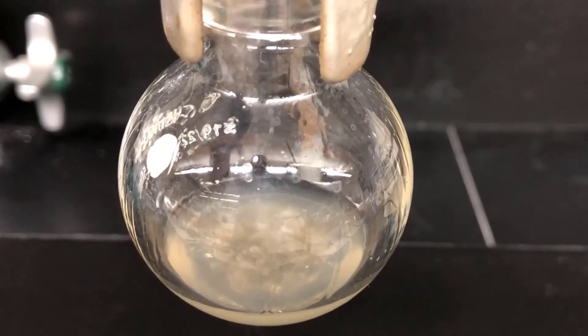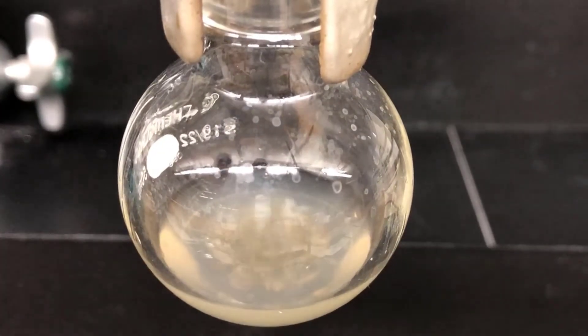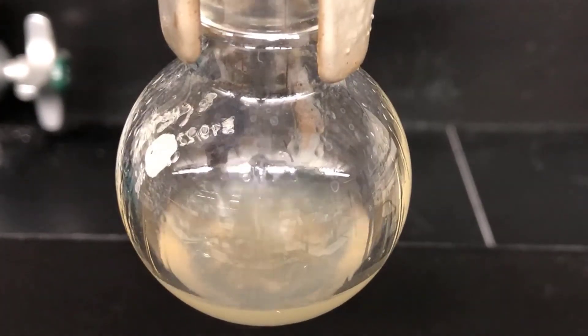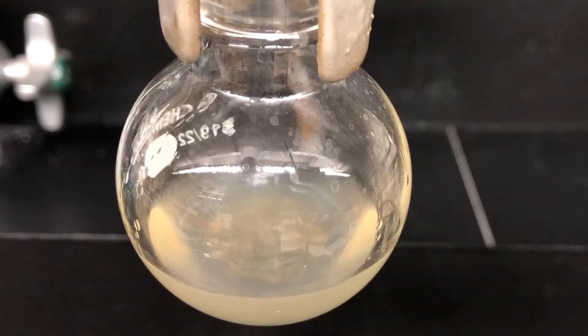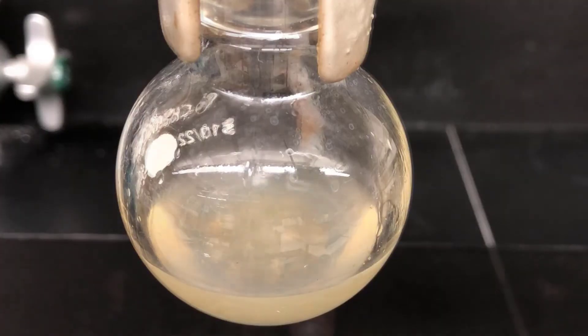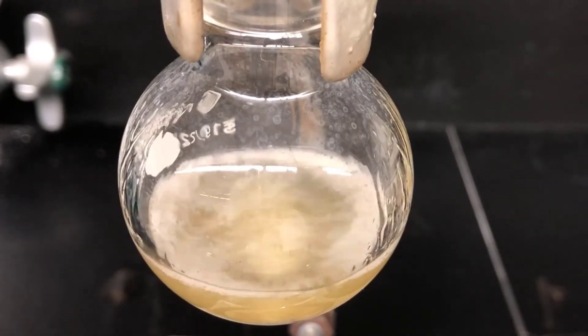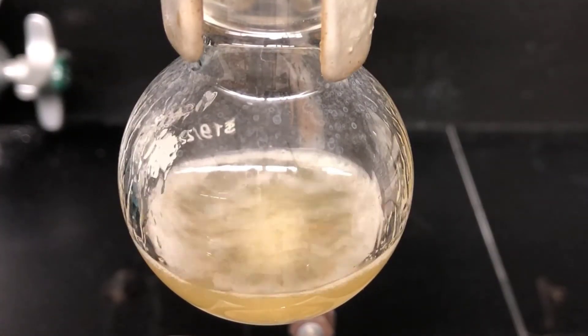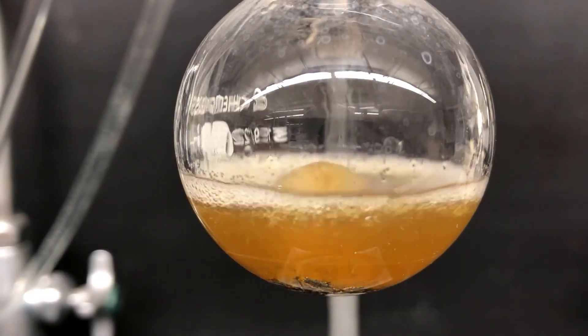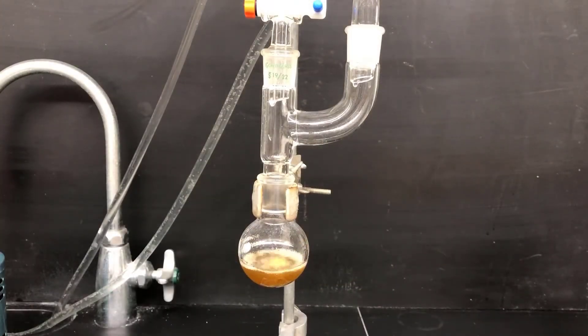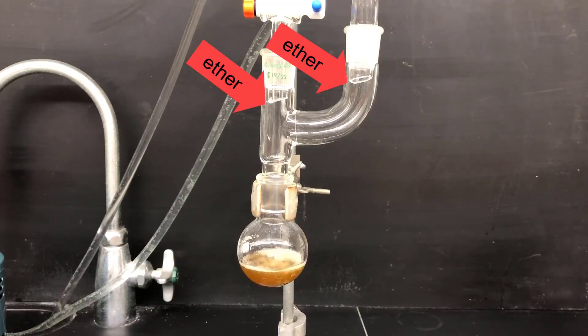Now that the initiation reaction has started, I'll add the rest of the bromobenzene and ether solution from the addition funnel in a couple of portions. The bubbling may slow down temporarily, but it'll pick back up again. And you'll end up with a rolling boil like this where you see more of the yellow and brown color developing. Here's a side view of the reaction boiling under its own heat. And here you can see ether condensing and dripping back into the vessel.